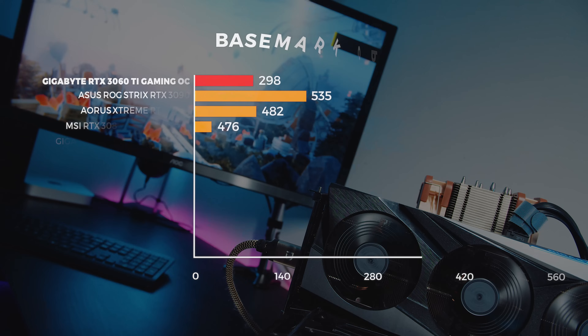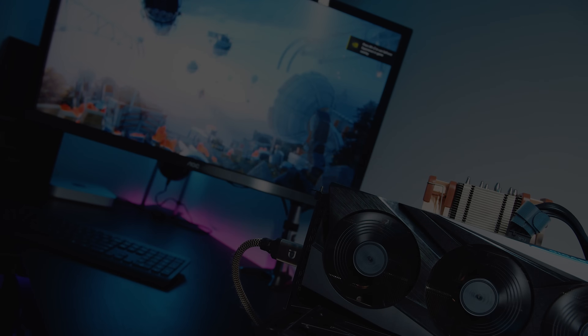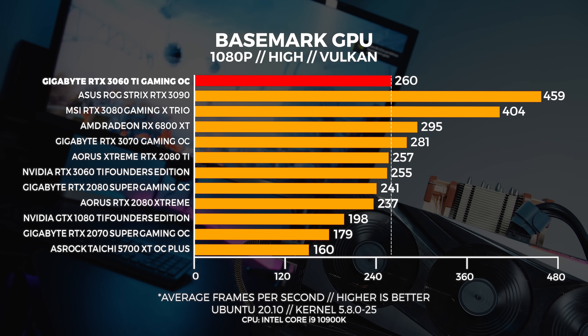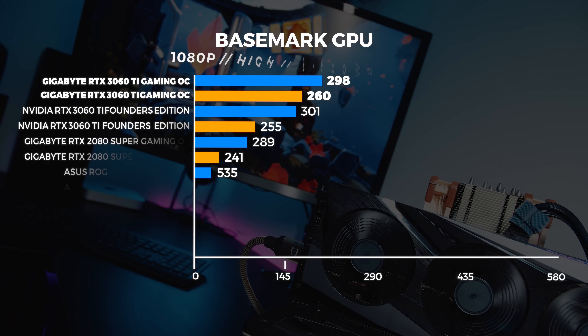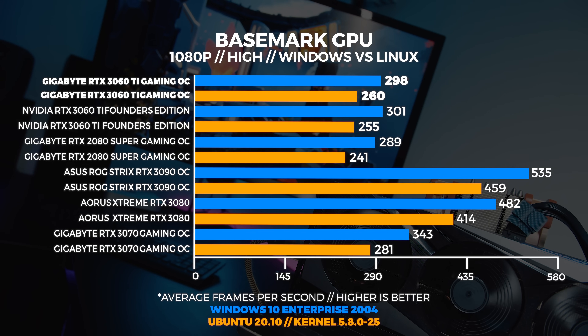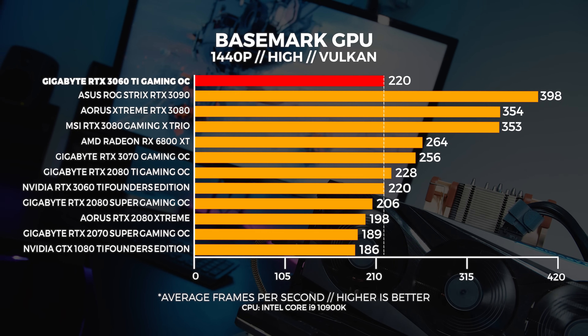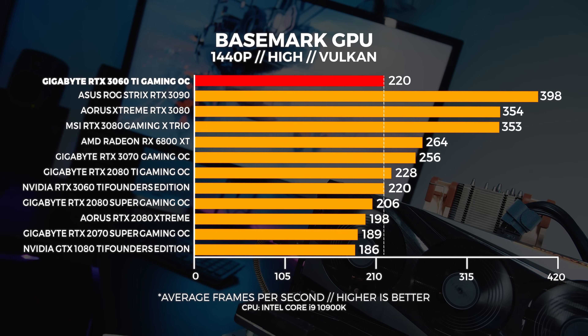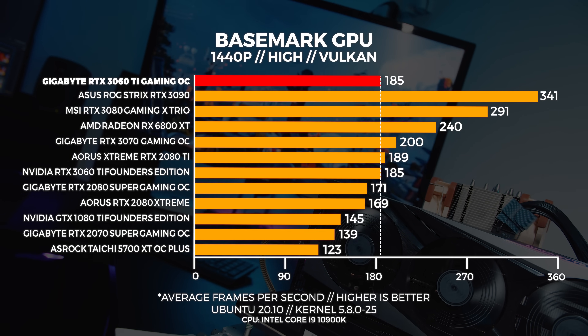Next up is Basemark GPU, which gives us a great indication of Vulkan performance in both Windows and Linux. At 1080p, we're seeing the Gaming OC coming in slightly behind the Founders Edition in Windows. In Linux, the 3060 Ti Gaming OC is around 5 frames faster than the Founders Edition card. At 1440p in Windows, both the 3060 Ti Gaming OC and the Founders Edition perform exactly the same, and in Linux we're seeing the same result echoed with both cards performing exactly the same again.